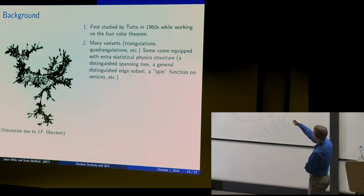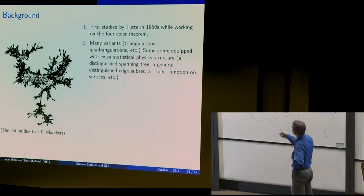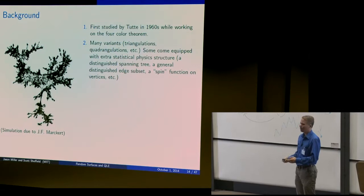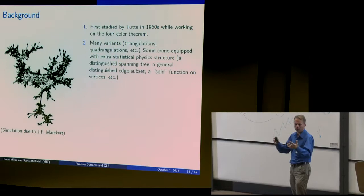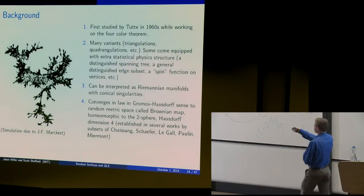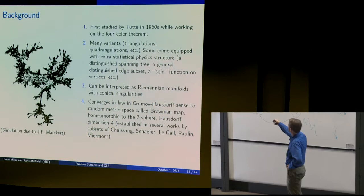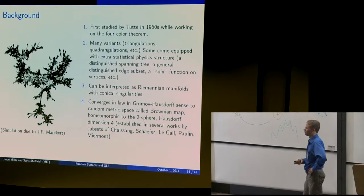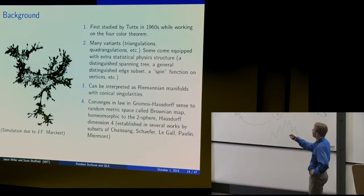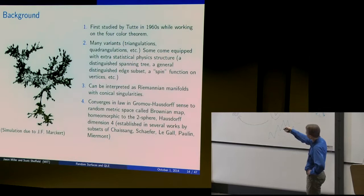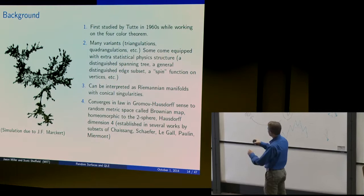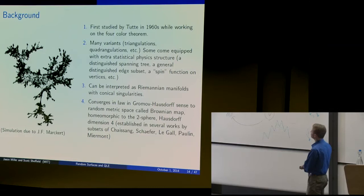These random planar maps go back to Tutte with the four-color theorem and come in many variants — triangles, quadrilaterals. Sometimes extra statistical physics structure is added: a spanning tree on top, or the Ising or Potts model. The simplest case has been studied by Schaeffer-Le Gall, Paul Miermont, and others. They managed to show that this thing converges to a metric space in the continuum that has fractal dimension four. So there is a continuum analog of this object that's somewhat understood. An important tool is certain bijections that send this surface to a pair of trees.